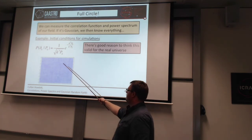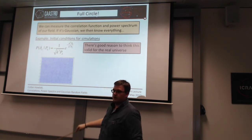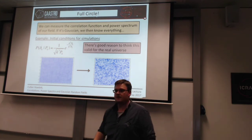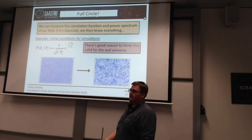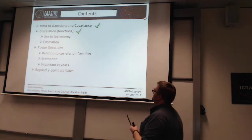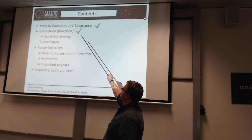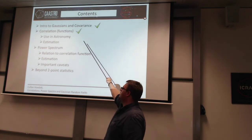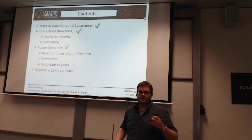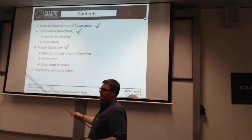In simulations, we set up initial density perturbations drawn from a Gaussian distribution with some input power spectrum, then evolve that over time, and you end up with the large-scale structure simulations you've seen countless times. So that's Gaussians and how they relate to covariance, then covariance to correlations and the correlation function, and how to estimate this, then the power spectrum and its relation to the correlation function, estimated using a grid that you Fourier transform, with some important caveats.